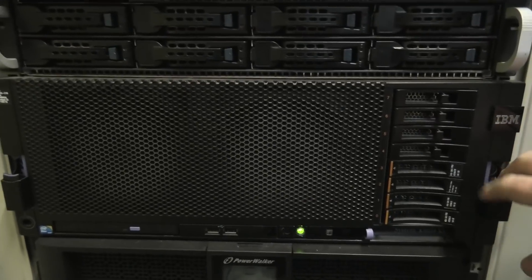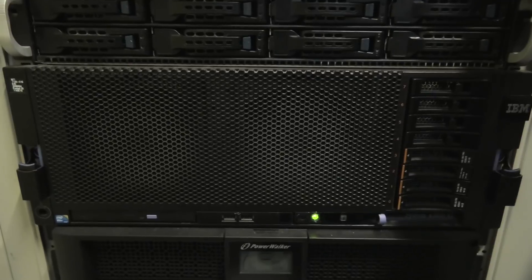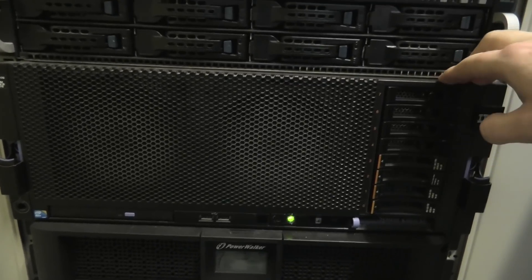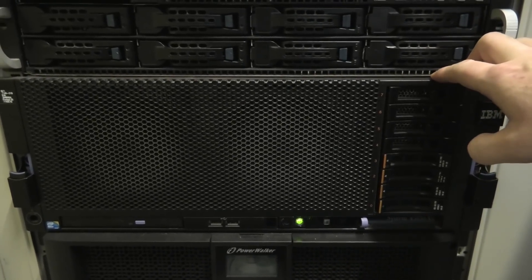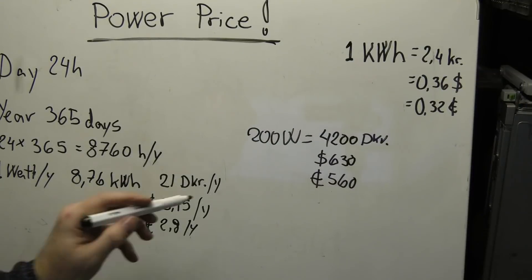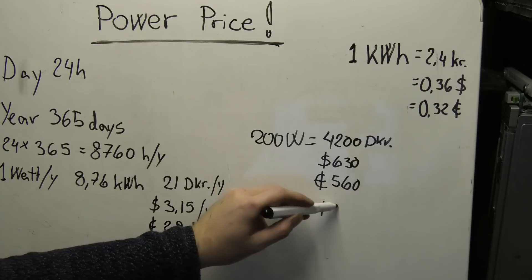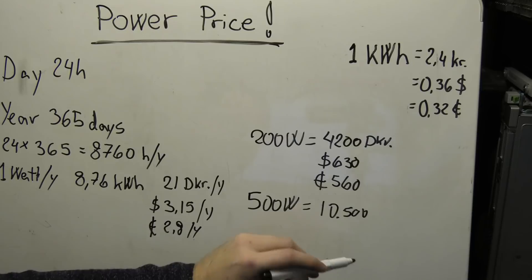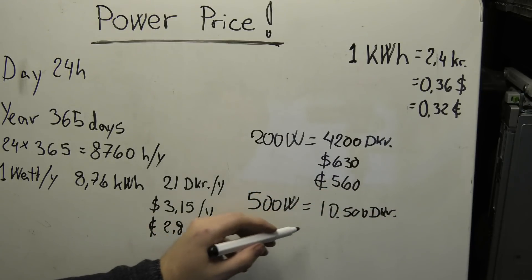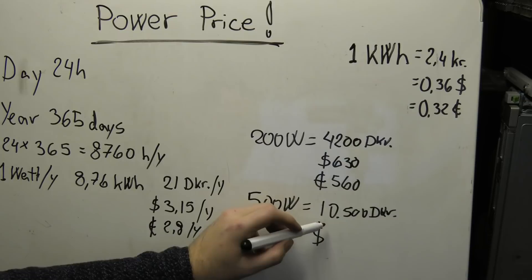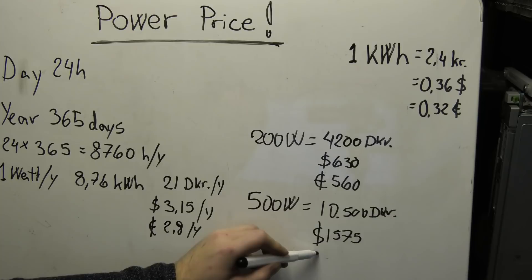It becomes worse if you run a bigger server like this server down here, which is the awesome IBM x3850 x5. That uses closer to 500 watts not doing too much. But yeah, that becomes really expensive. So 500 watts in Danish kroner, that becomes 10,500 DKR, and in dollars that becomes $1,575, and euros 1,400.